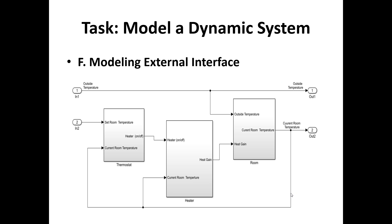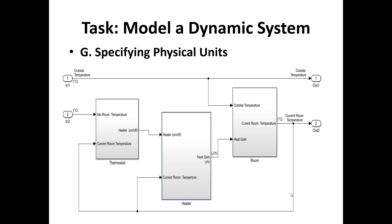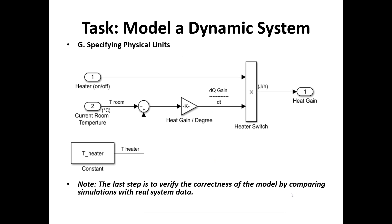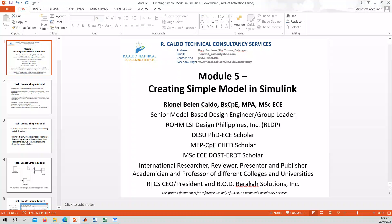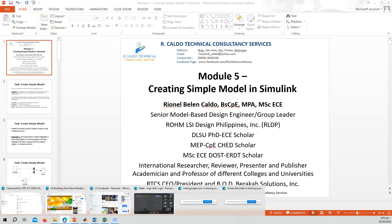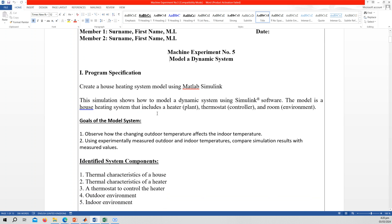As we model with the external interface, the outside temperature is connected with our three subsystems: thermostat, heater, and room. We can also specify physical units — in our case, temperature in degrees Celsius. The last step is to verify the correctness of the model by comparing simulations with real system data. Data is provided in the MATLAB Simulink example, but you can also try using actual room temperature values if you'd like.